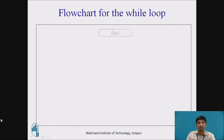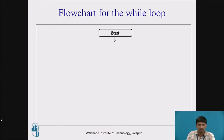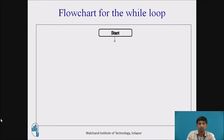Flowchart for the while loop: it starts with a start point, which is where the execution of the program begins. Next is the initialization phase, where we give the minimum or initial value for starting. For example, if I'm calculating the arithmetic progression from 1 to n numbers, the initial value will be 1, and the sum value will be initialized to 0.